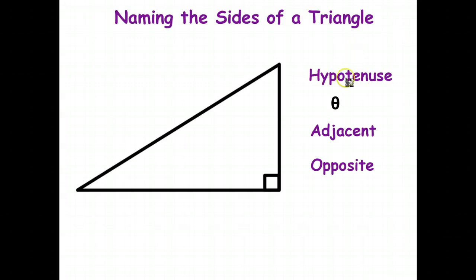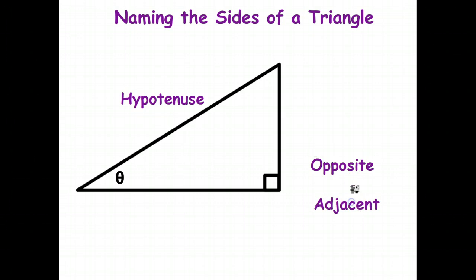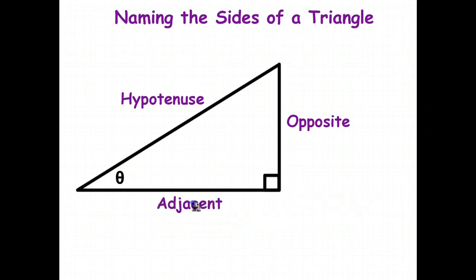Let's take an example. I'll place the angle just down there and identify the three sides of this triangle. The easiest one is the hypotenuse — opposite the right angle — so that goes there. The opposite side is the one across the triangle from this corner, so that would be that side. The side next to the angle — the adjacent side — is the remaining side. So: hypotenuse, opposite, and adjacent.